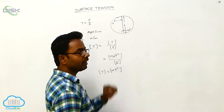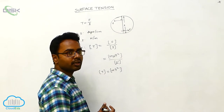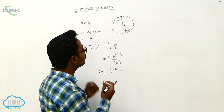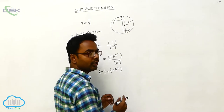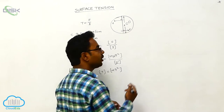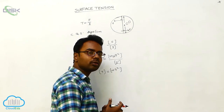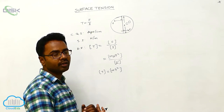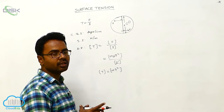From the surface tension property, if the free surface of the liquid is divided into two equal parts, those parts pull each other with equal forces in opposite directions. In fact, any two small parts on the free surface pull each other in opposite directions. Because of this, the free surface of the liquid behaves like a stretched elastic membrane or stretched elastic rubber sheet.